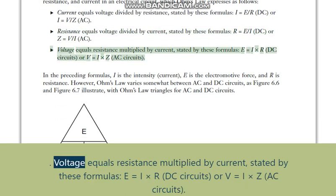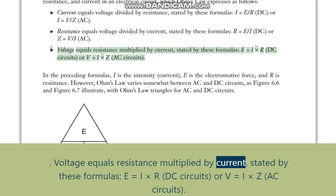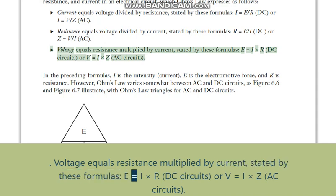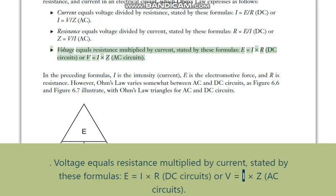Voltage equals resistance multiplied by current, stated by these formulas: E equals I times R for DC circuits, or V equals I times Z for AC circuits.